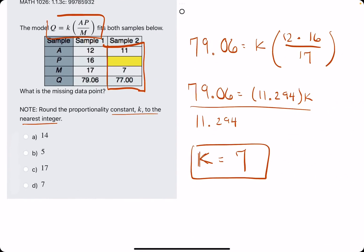So our Q value is 77, our K value is 7, our A value is 11, we do not know our P value, and then we're dividing by M, which in this case is also 7.